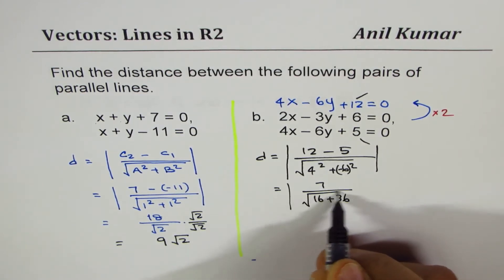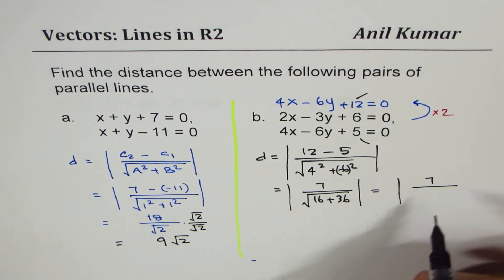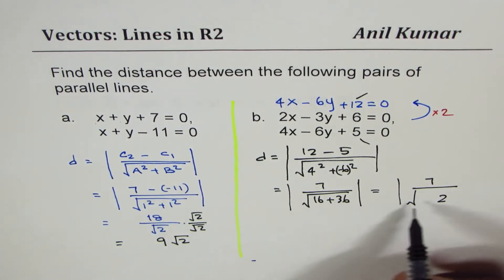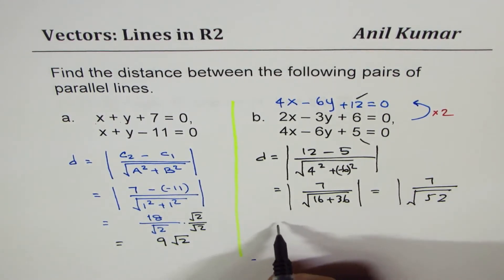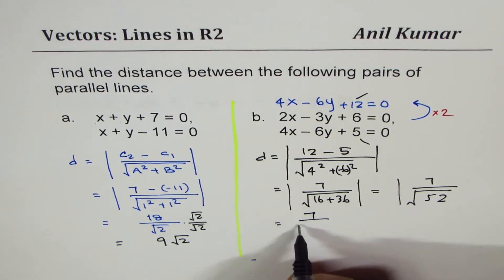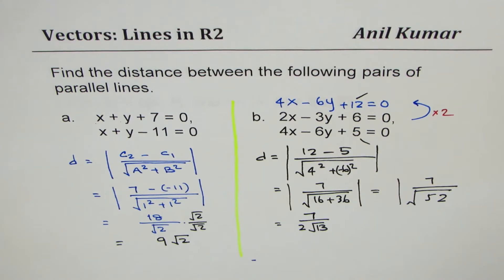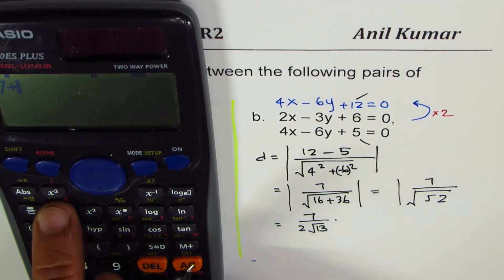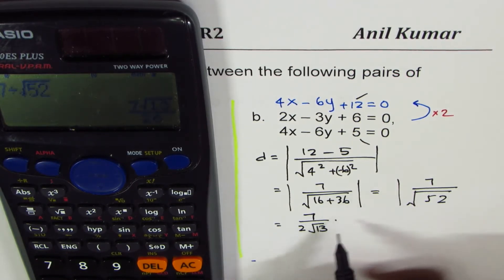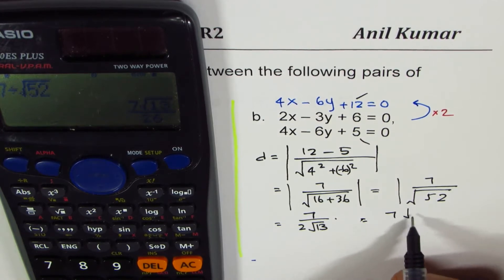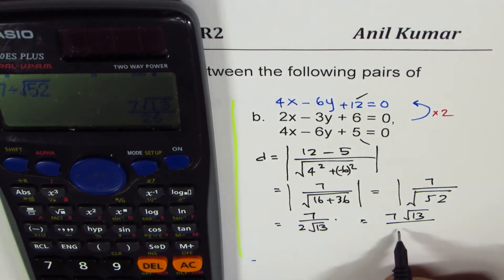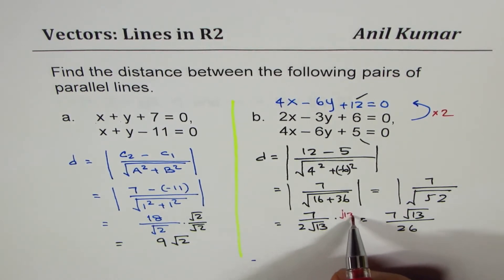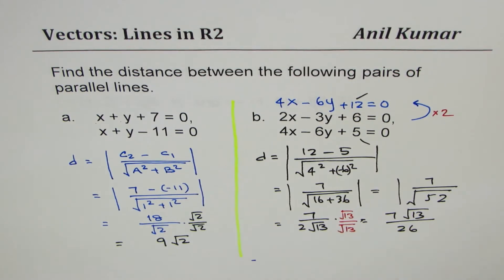That gives 7 over √(16 + 36) = 7/√52. Since 52 = 4 × 13, we can write this as 7/(2√13). Rationalizing by multiplying by √13/√13, the answer becomes 7√13/26. It's always good practice to rationalize, and that's how we solve the second set.